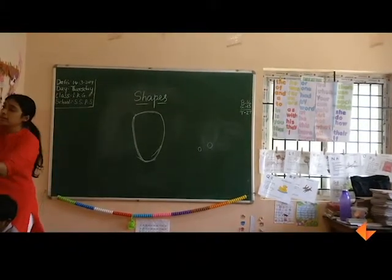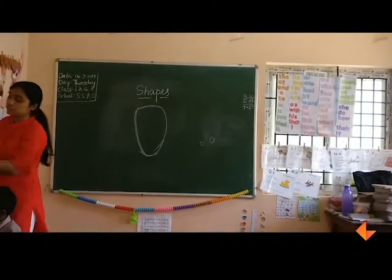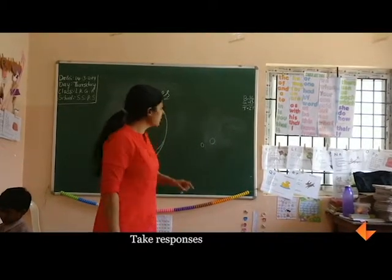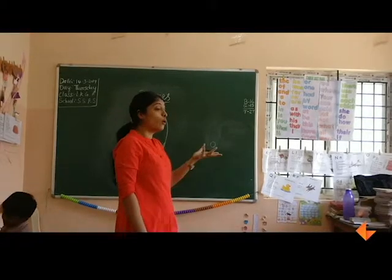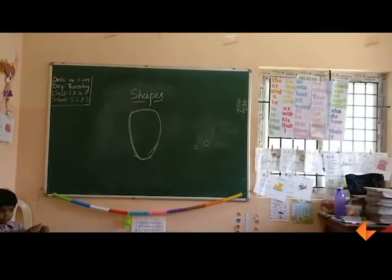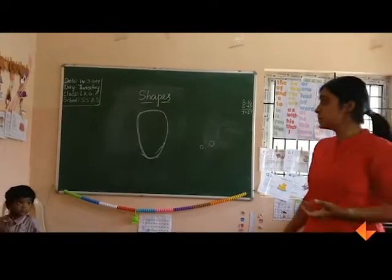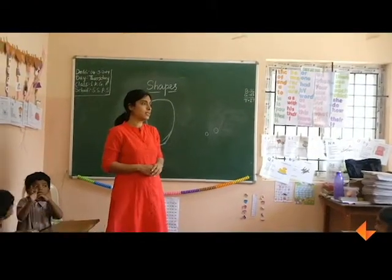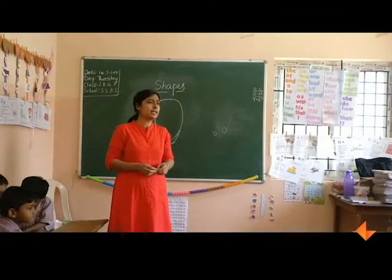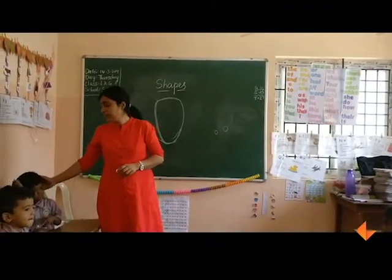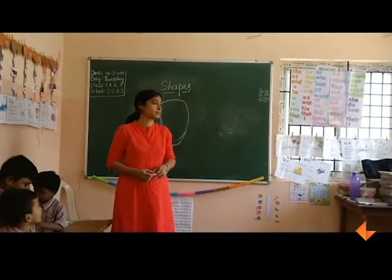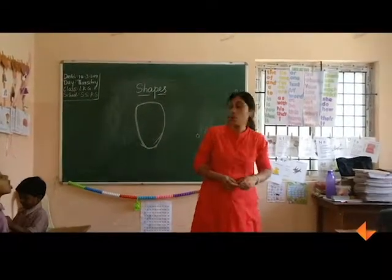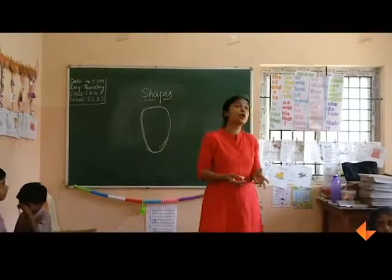What have you seen? What have you seen? The circle is round. What have you seen? Chips! Chips are what shape? Circle. Where is the oval shape? Something that you eat — chips! Very good.